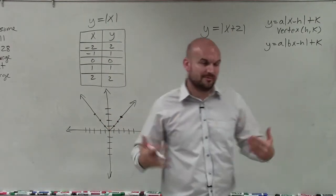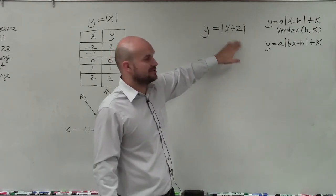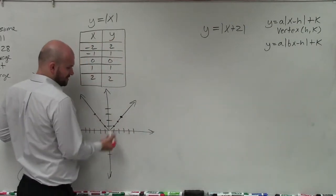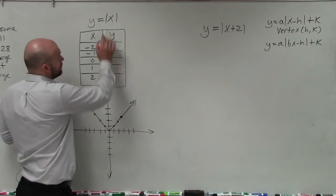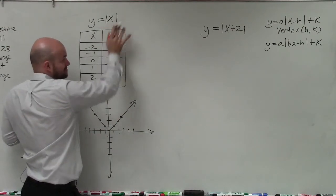So what we want to do is understand what exactly is y equals absolute value of x plus 2, and how is that going to affect our graph? Notice that the vertex is where our graph is changing directions. You can see our vertex is at (0,0), where I'm not adding or subtracting any numbers inside the absolute value or outside the absolute value.